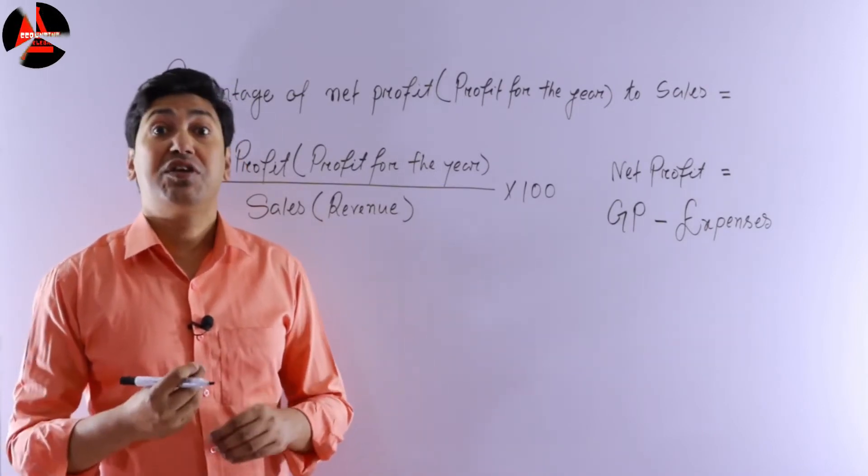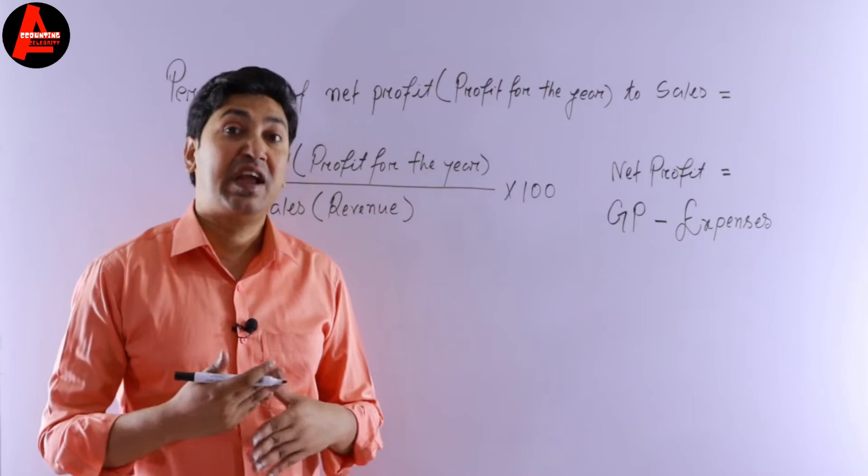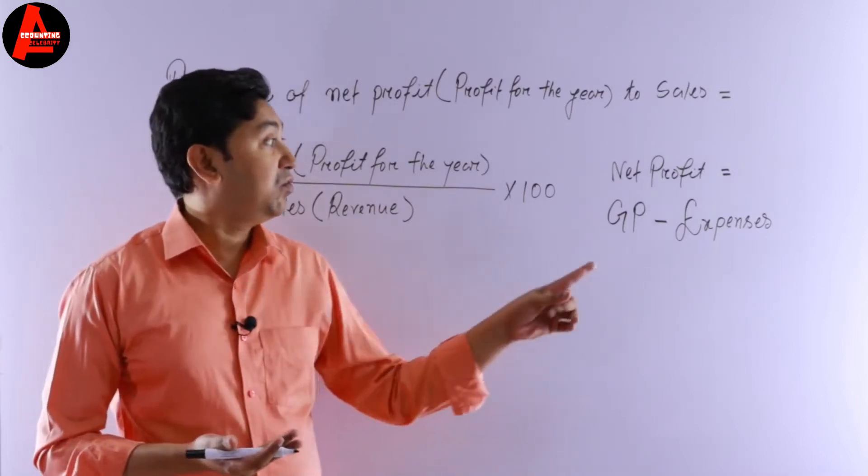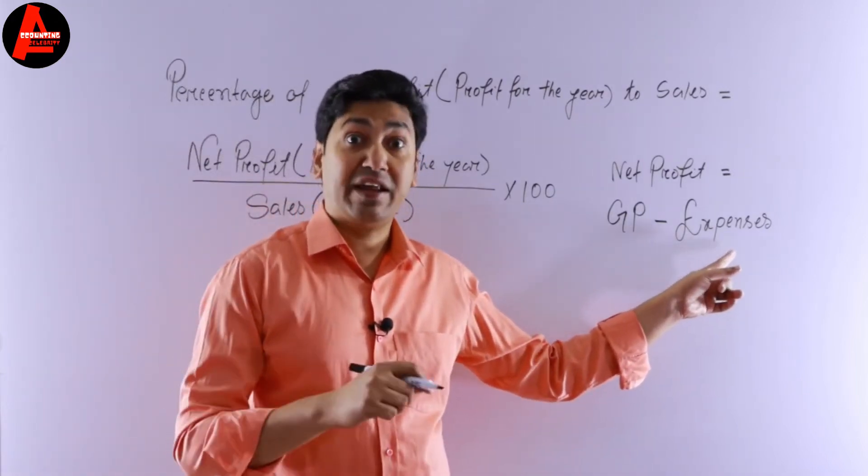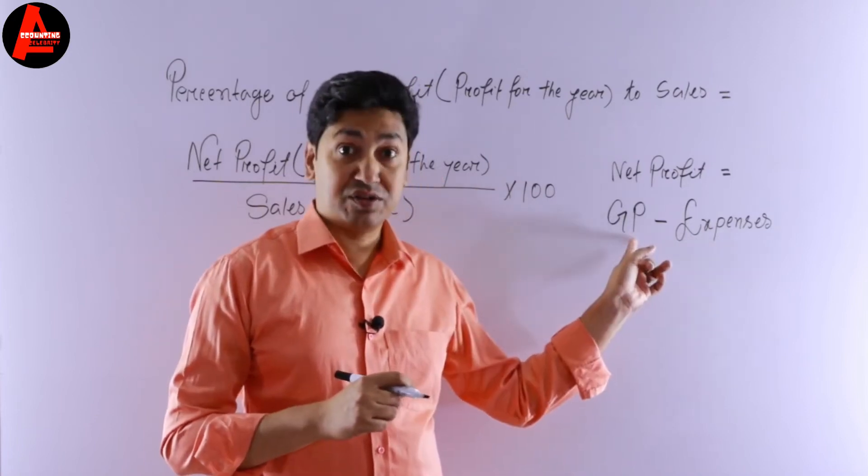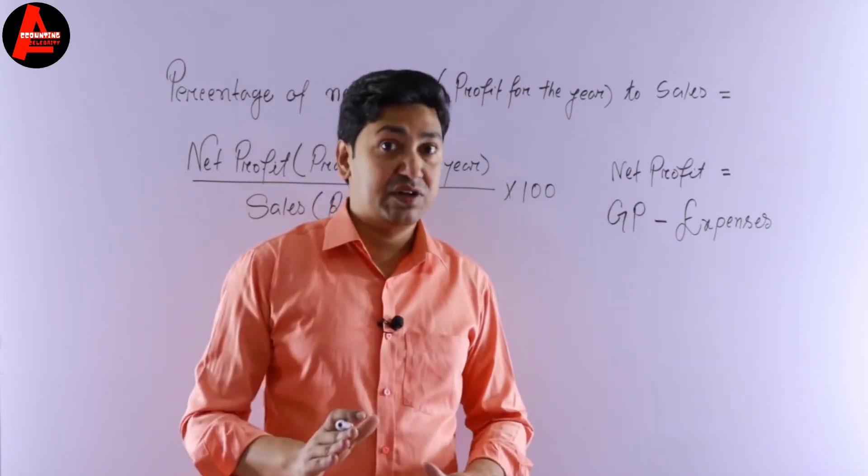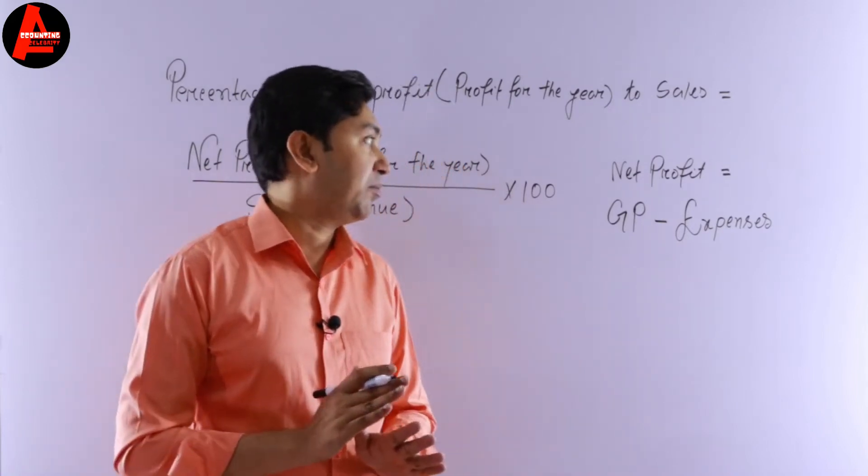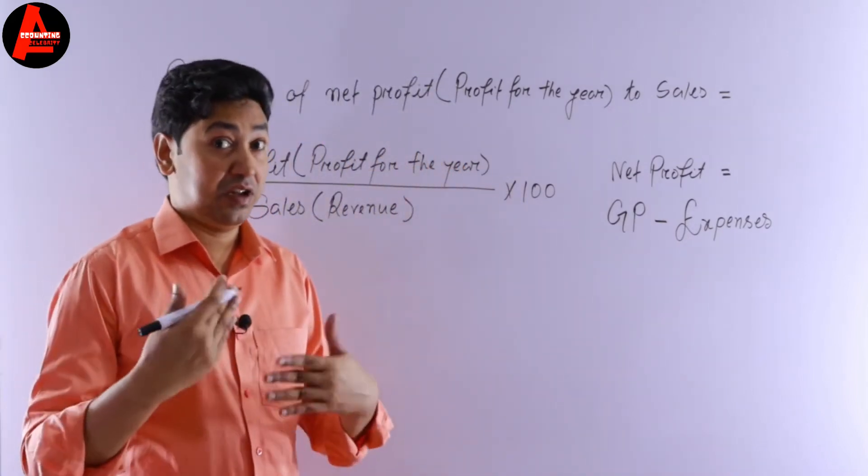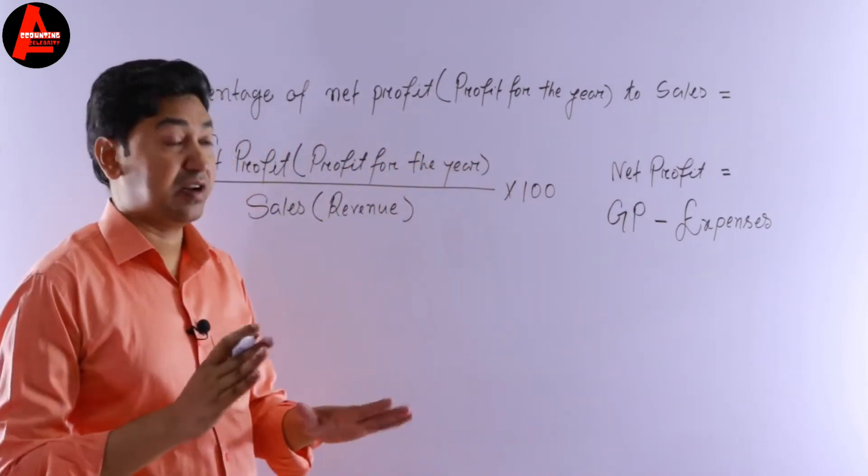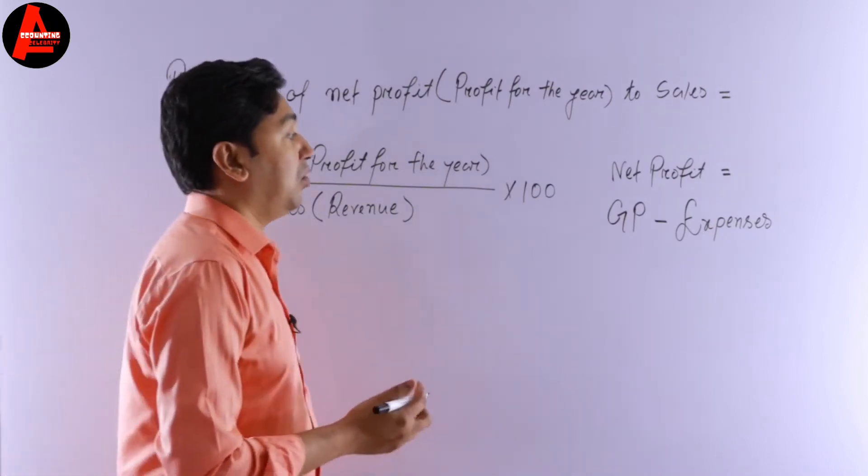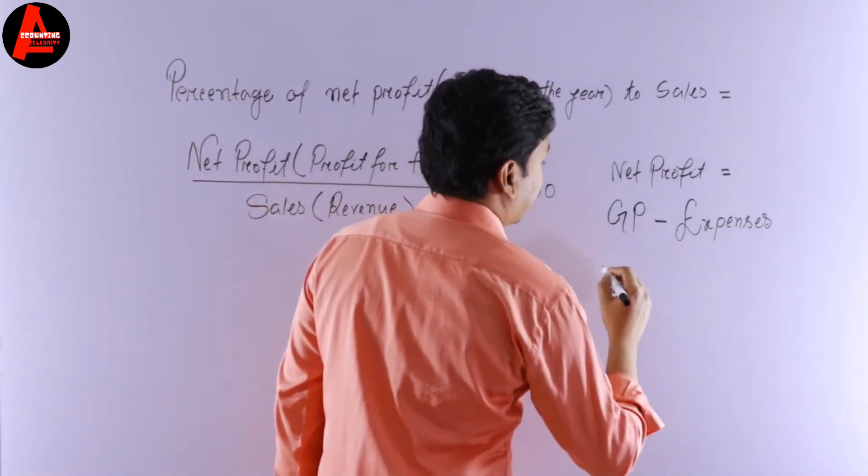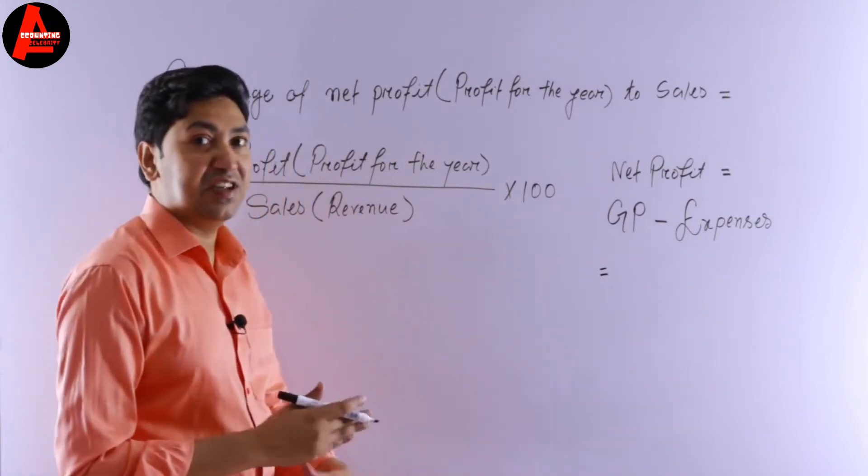If we have more items like incomes, then we have to subtract expenses then add incomes with this gross profit. Here there is no income so we will not think about income, but you may have income in different questions. Learn everything now.